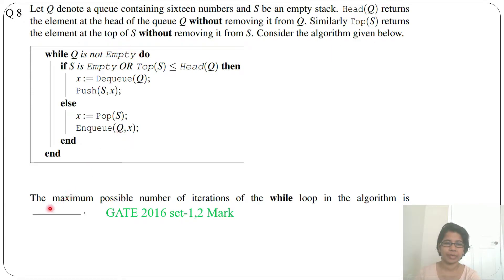Here one algorithm is given and it is asking the maximum possible number of iterations of the while loop in the algorithm. So it is asking how many times the while loop will run. And here it is given Q contains 16 numbers.